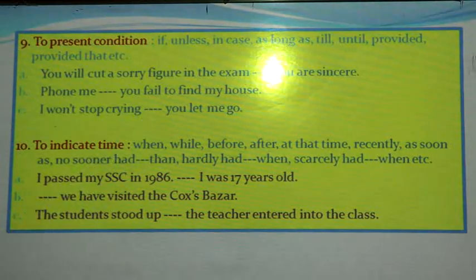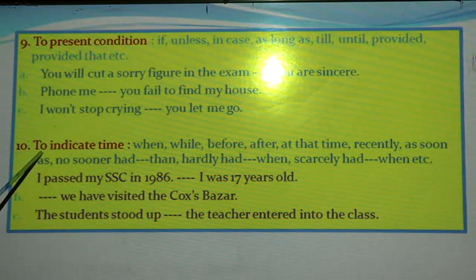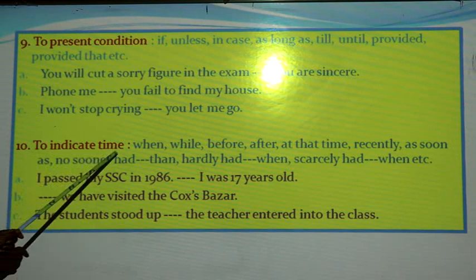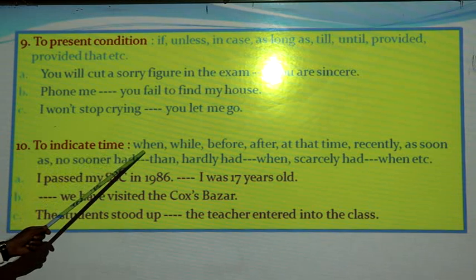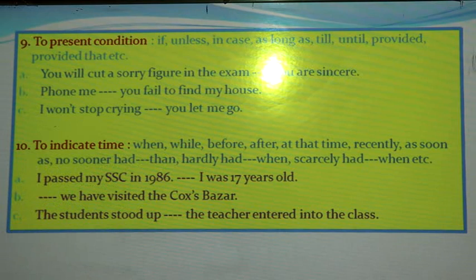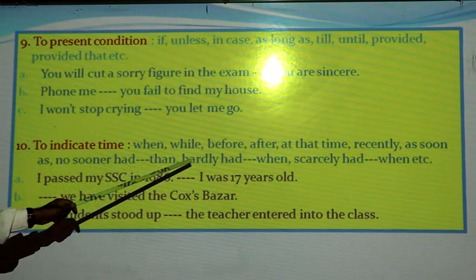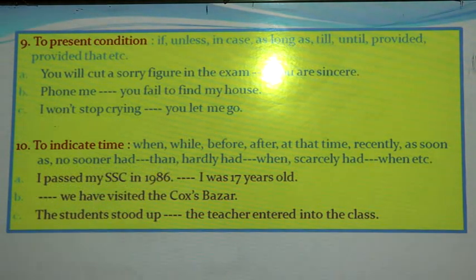Number 10: to indicate time. Now and then, we use adverbs of time to connect different parts of the sentence. Time-indicating conjunctions or sentence connectors include: when, while, before, after, at that time, recently, as soon as, no sooner had...then, hardly had...when, scarcely had...when, etc. This type of conjunction or sentence connector is used in order to indicate time.